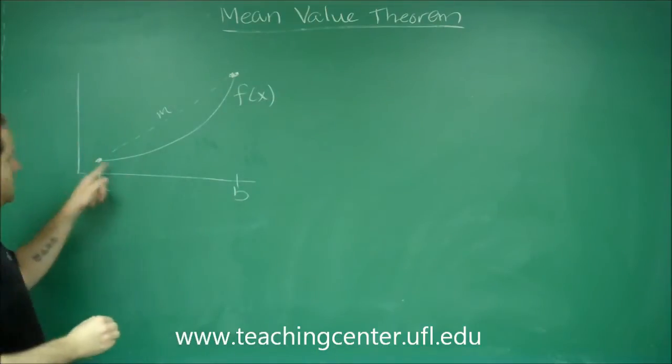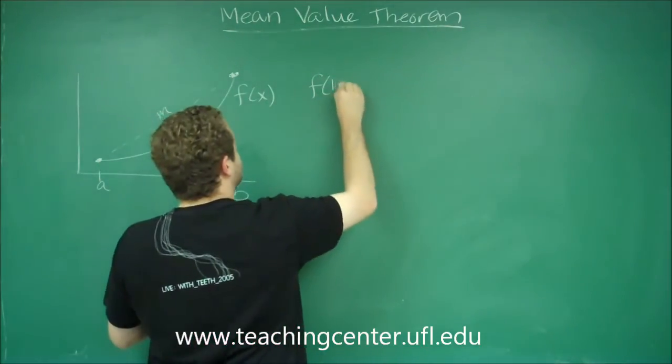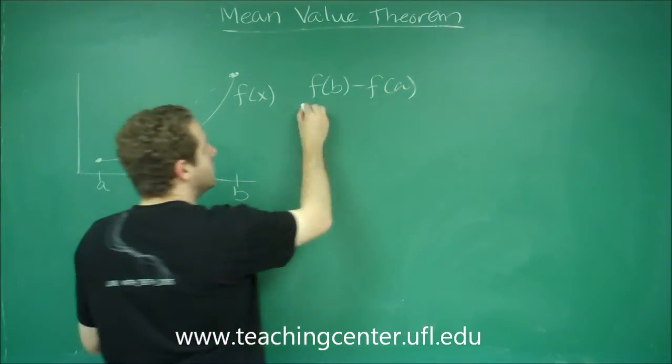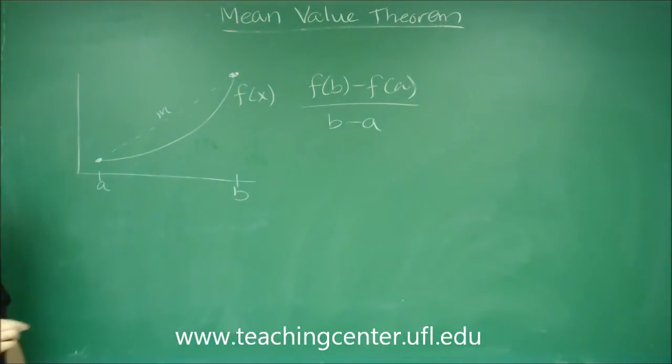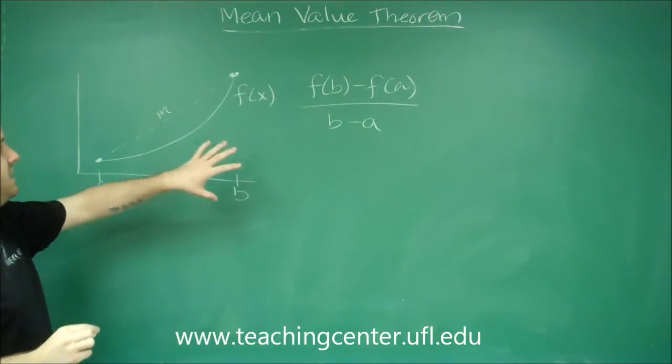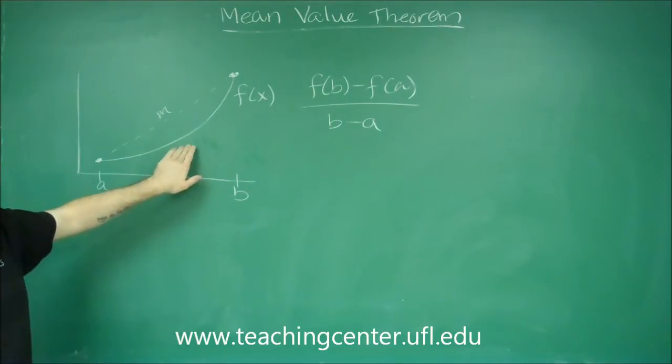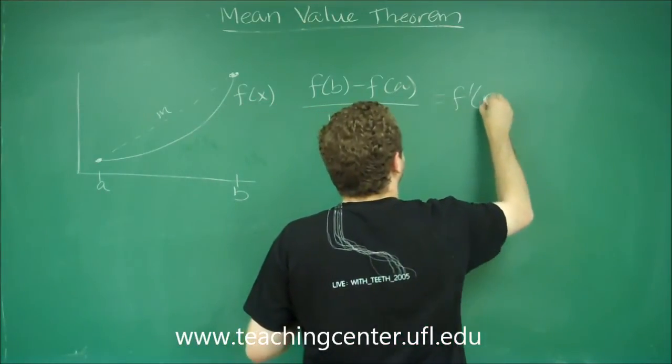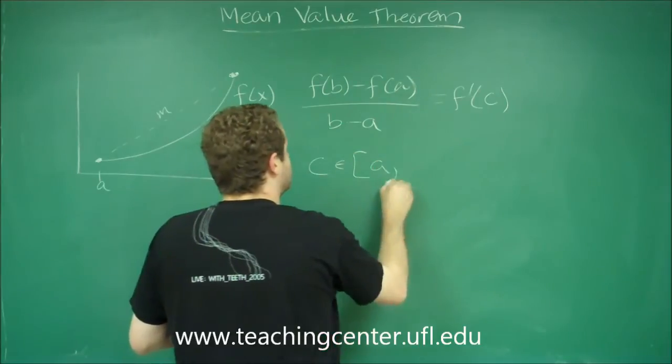So we're saying that the slope of that dotted line has to be the derivative, the slope of the tangent line to this curve, somewhere in between a and b. So let's just say it's f prime of c, where c is in between a and b, somewhere.